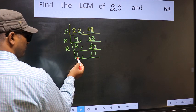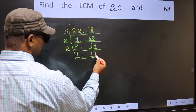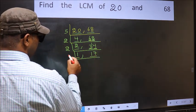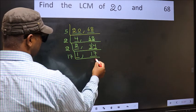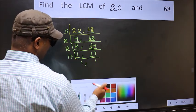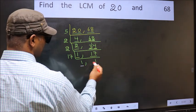Now we got 1 here. So focus on the other number 17. 17 is a prime number. So 17 once 17. So we got 1 in both the places.